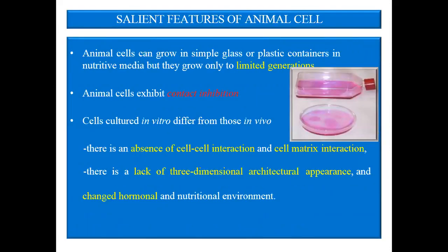Animal cells can grow in simple glass or plastic containers which contain nutritive media, but they grow only to limited generations. In these bottles or petri dishes, made of glass or plastic, the liquid media contains the animal cells being cultured. These cells exhibit contact inhibition — that means when the cells grow and reach the surface of the glass vessel, their growth is stopped.